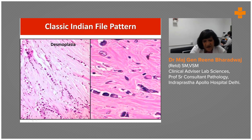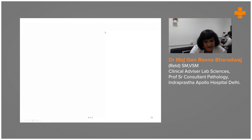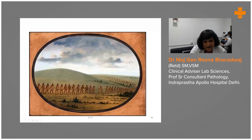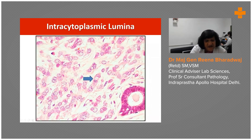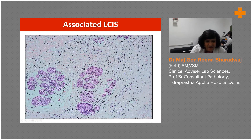The desmoplasia causes what is called the Indian file pattern — cells moving in a single line. The classical variant does not produce much of a host reaction; they just infiltrate the fat with hardly any stromal response at the expanding edge of the tumor, and they do not produce many tumor-infiltrating lymphocytes. Intracytoplasmic lumina are evident within the cords and Indian files, and associated LCIS is present in 65% of cases.